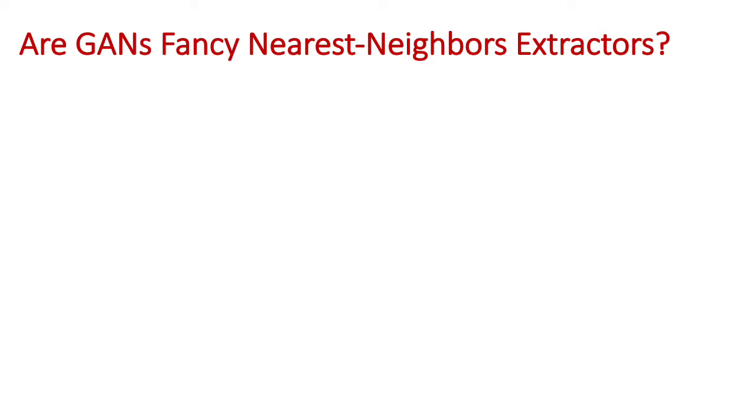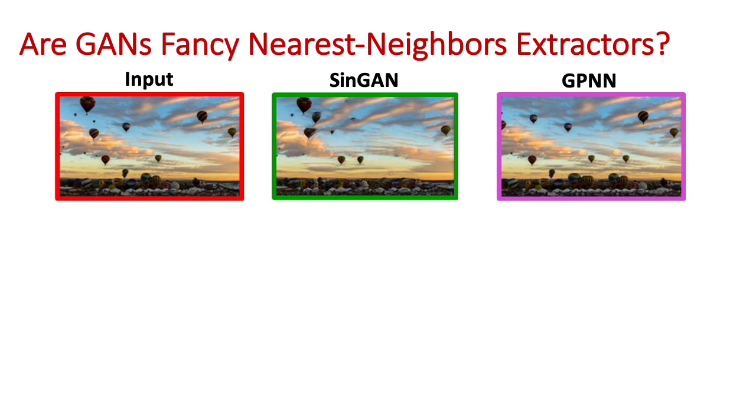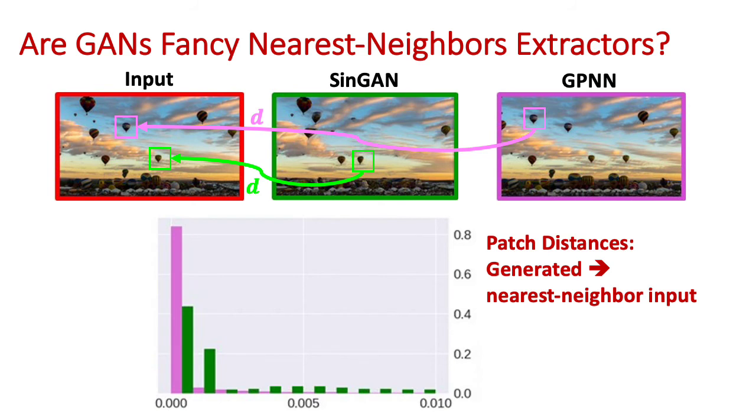We also had the opportunity to ask, are GANs only elaborated machinery for nearest neighbor extraction? We started by generating an image using GPNN and SinGAN. Then, we measured the distance between generated patches and their nearest neighbor in the input. A distance histogram is presented. As expected, GPNN's output patches are essentially input patches.